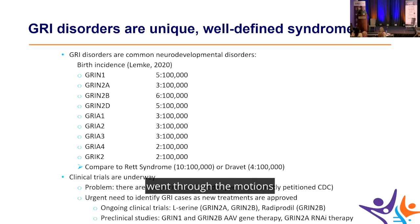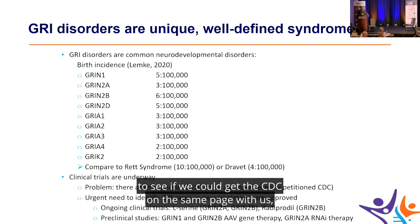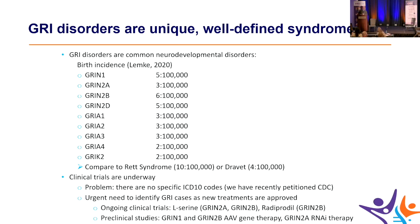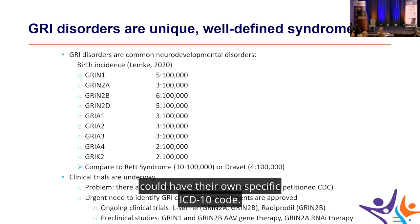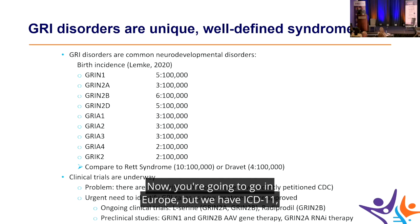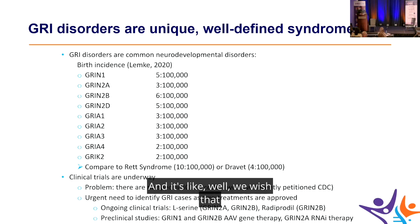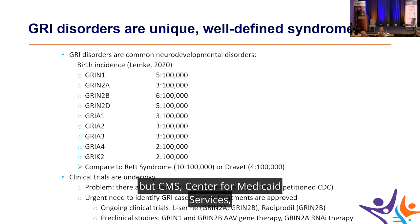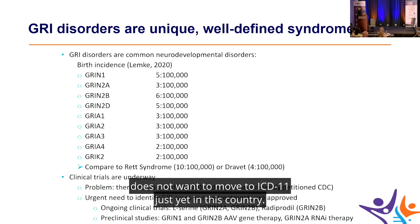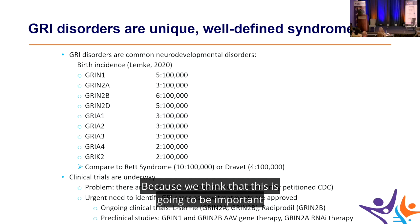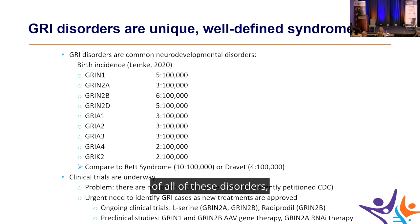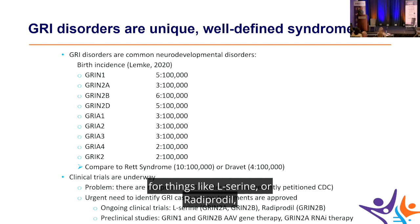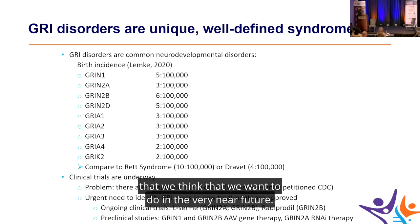A group of us recently went through the motions of trying to get the CDC on the same page so that each syndrome could have its own specific ICD-10 code. In Europe they have ICD-11 and everyone has their own code, but CMS — the Center for Medicaid Services — does not want to move to ICD-11 yet. We are doing what we can to get specific codes, as this will be important for understanding the impact of these disorders and identifying patients for trials involving L-serine, radiprodil, and other potential treatments.